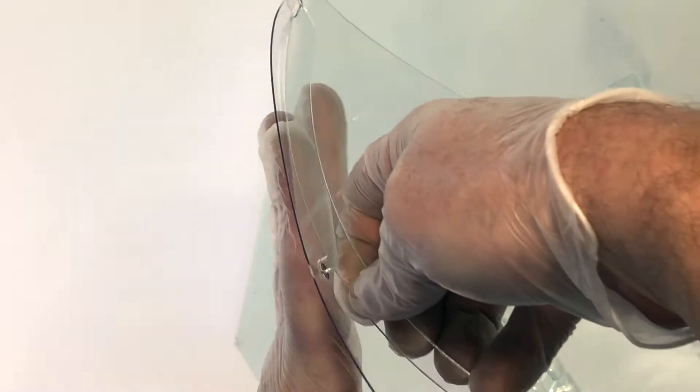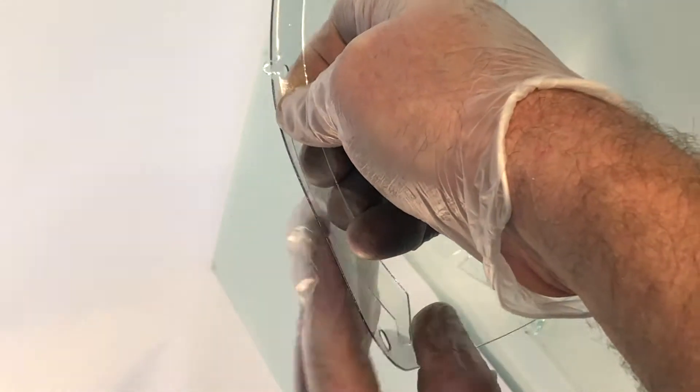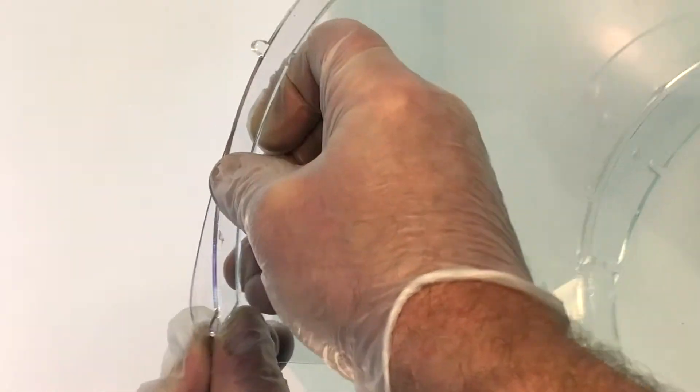Put in the two edges first, the two ends. Let this hang out the bottom and then snap that into place.